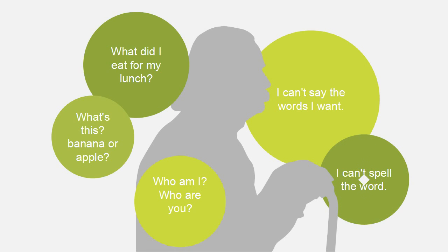Alzheimer's disease has common symptoms that include dementia, memory loss, decline in speech, and confusion. For example, patients may forget themselves or their relatives. They also do not know simple things, such as fruits, vegetables, and so on. When symptoms get serious, they may not even know how to express themselves or write words.